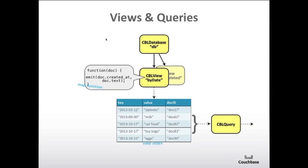When you do a query, you're essentially taking a slice of the view. If you did a query with no parameters, no start key or end key, you would get the entire view. If you provide, like in this example, a start key of 2013-09-30 and an end key of 2013-10-17, that defines the boundaries of the query. It's very efficient because the view is already pre-sorted and stays sorted, so when you do a query you're essentially just grabbing a chunk of the view.